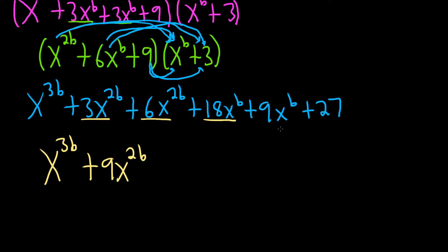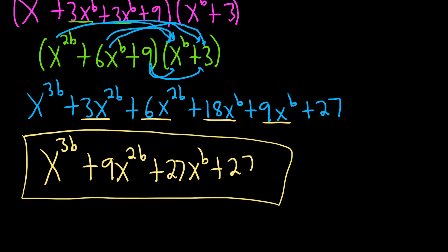And 18x to the b plus 9x to the b is 27x to the b. And the last one would just be 27. And that would be the final answer. I hope this video has been helpful.